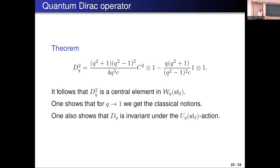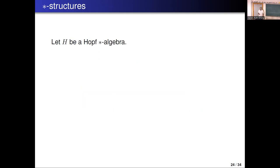We also compute Dirac cohomology, considering finite-dimensional modules and Verma modules. Most of the time the cohomology is zero, which is expected, but not always — in some particular cases we get something non-zero. We don't know yet if that's interesting for applications, but we do it because it's useful in the classical situation, so perhaps somebody will know how to use it in the quantum setting.